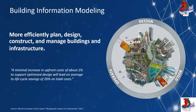BIM also covers infrastructure as well — not only vertical structures but also horizontal infrastructure. In fact, the letter 'B' in BIM stands for 'building,' which is a verb explaining the action of work. This means Building Information Modeling can be used and implemented in whatever you want to build, whether it's a vertical building or infrastructure.